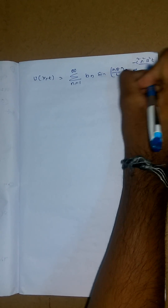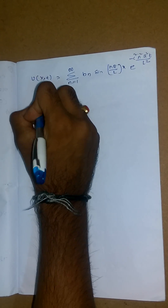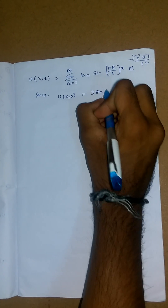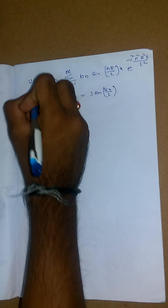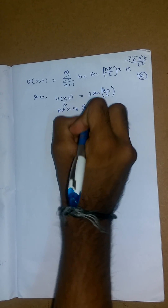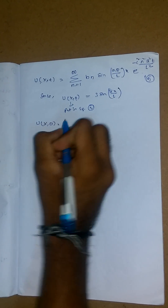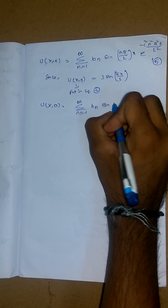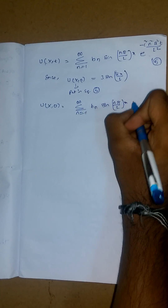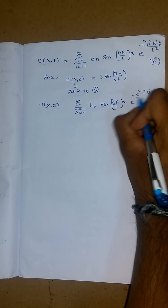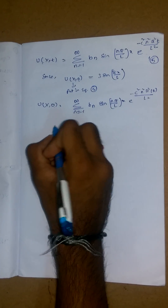Since the initial condition gives u(x,0) = 3 sin(πx/L), we substitute t = 0 into equation (5). The exponential term becomes e^0 = 1, so u(x,0) = Σ (n=1 to ∞) B_n sin(nπx/L).